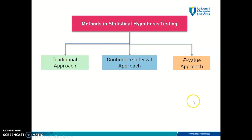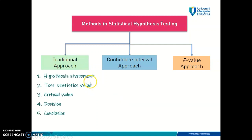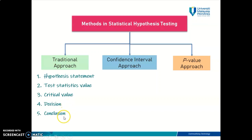Before we go into the confidence interval approach, let's recap what you learned in the previous videos. In the traditional approach, there are five steps altogether. The first one was to construct your hypothesis statement — this is where you get your H-null and also your H1. The second step is to find your test statistics value using the appropriate formula from your formula book. The third one is to find or establish the critical value, and decide whether it is a right-tail, two-tail, or left-tail test. The fourth step is to make a decision whether to reject H-null or to do not reject H-null. And finally, the conclusion — you need to make a statement about your claim.